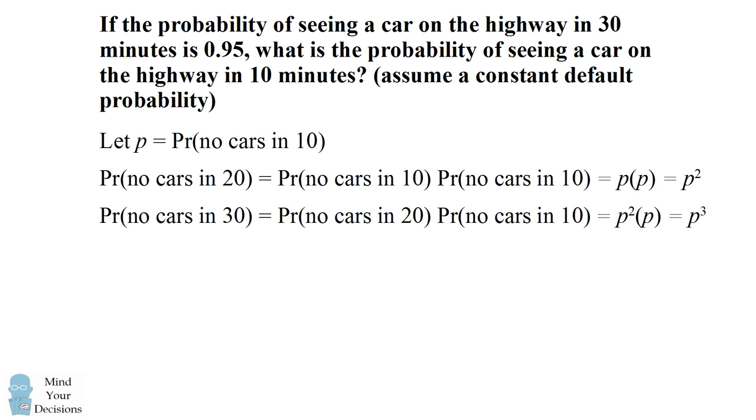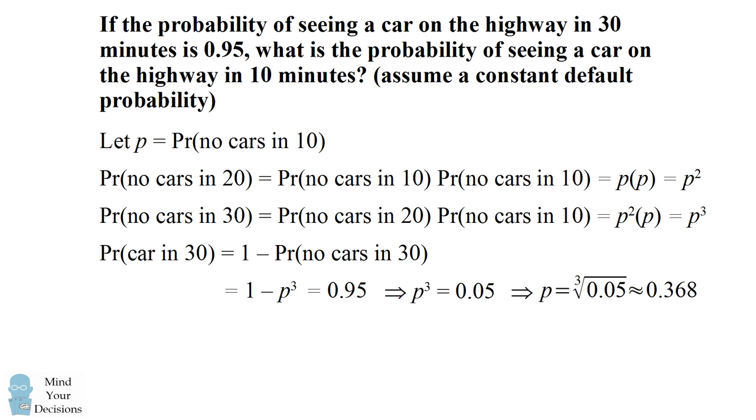So now what is the probability of seeing some car in 30 minutes? This is 1 minus the probability of seeing no cars in 30 minutes. This will be equal to 1 minus p cubed. We're given in the problem this is equal to 0.95. We can then rearrange this equation to get that p cubed is equal to 0.05 which means p is equal to the cube root of 0.05 which is approximately 0.368.